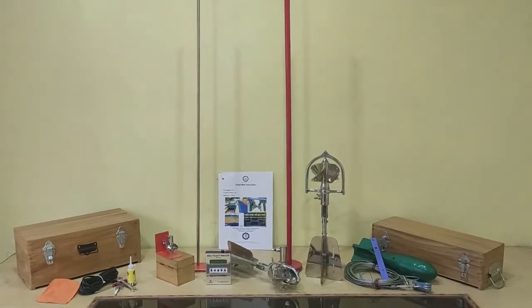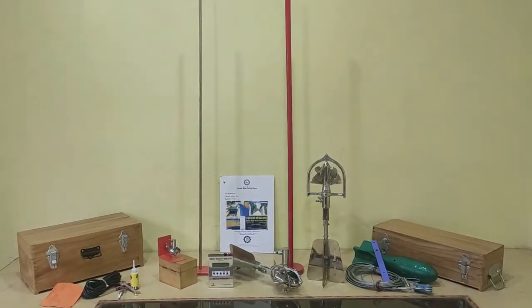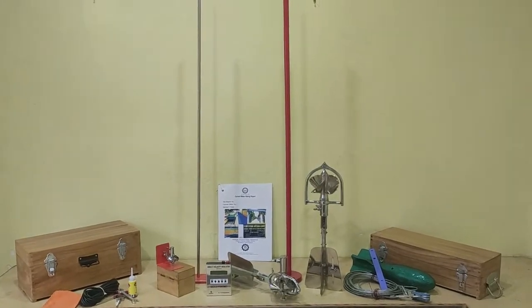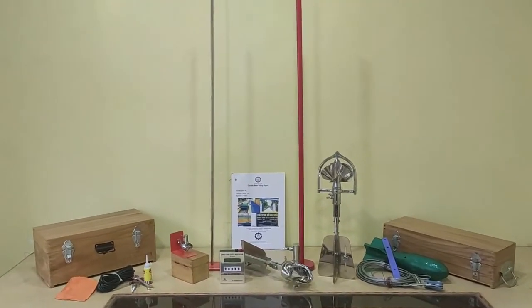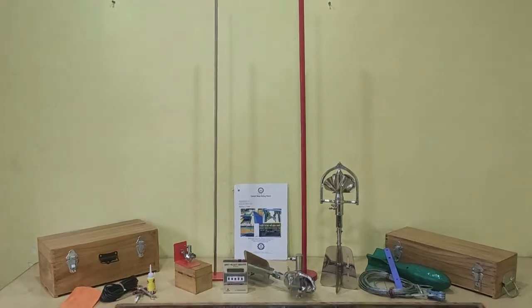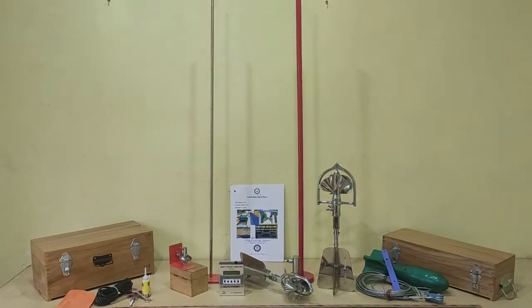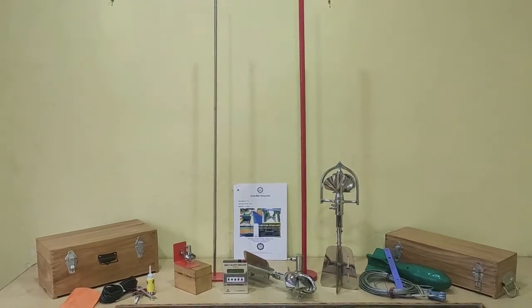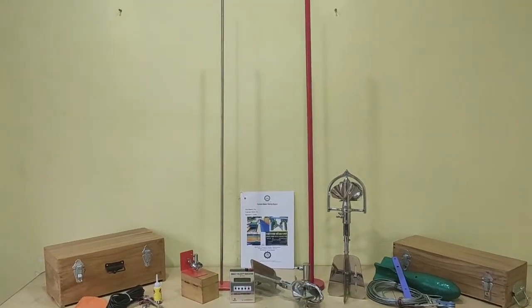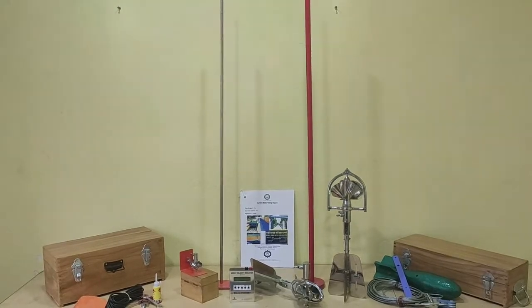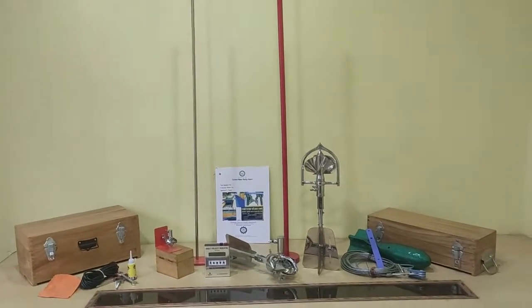There are two types of arrangements we use for taking the velocity with these instruments. First one is the wetting rod and the second one is the fish weight. The wetting rod we use where the depth of stream is not more than 1 meter, or when the user cannot handle the current meter by the wetting rod, then we go for the fish weight arrangement.